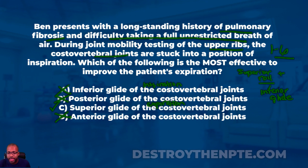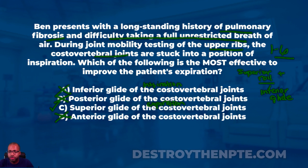Let me do a quick recap for those taking notes. When talking about the costovertebral joints and upper ribs, we're talking about ribs one through six. The costovertebral joints are convex moving on concave. When you have convex bones moving on concave bones, the roll and glide move in opposite directions — as the roll goes up, the glide goes down. Vice versa: roll goes down, glide goes up.